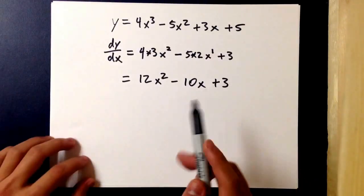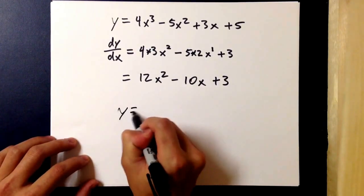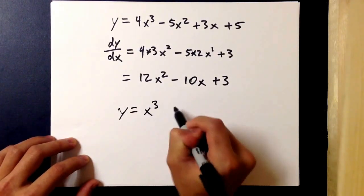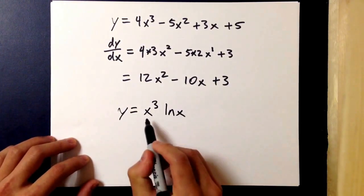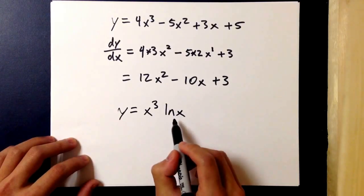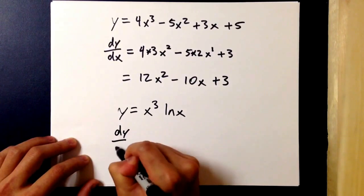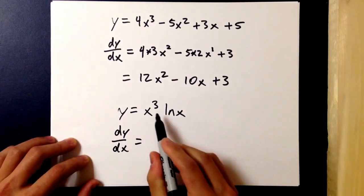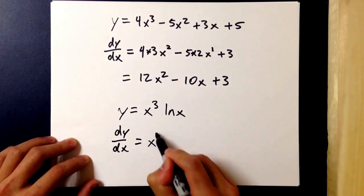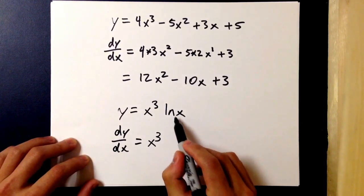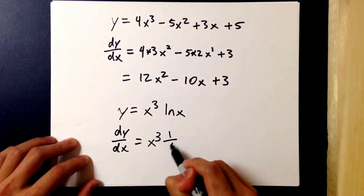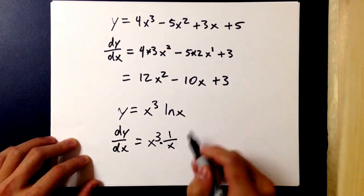An example of that would be y equals x cubed natural log x, where x cubed is u and natural log x is v. The derivative would then be the first u, x cubed, times the derivative of v, which is 1 over x, plus